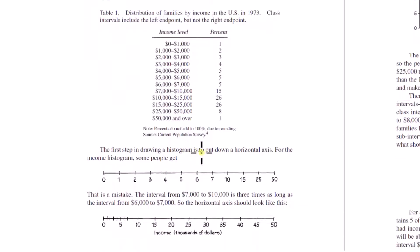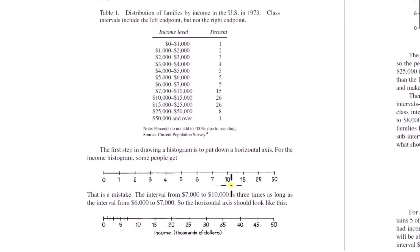The first step in drawing a histogram is to put down a horizontal axis. Some people make the mistake of spacing unevenly — for example, having zero, one, two, three, then jumping to seven and ten. The interval from seven to ten is three units wide, but it gets drawn the same width as six to seven or five to six. For a histogram, your horizontal axis needs to be evenly spaced. The reason, as discussed in section one, is that areas represent percentages — so the spacing must be uniform.